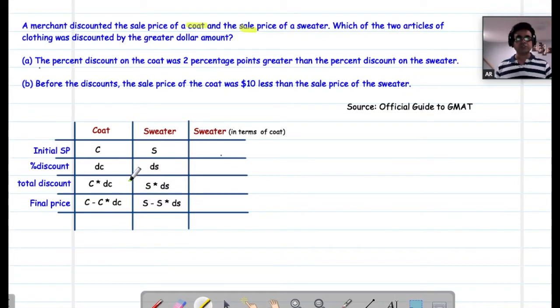And what the question is asking us is can we establish whether C multiplied by DC is greater than or less than S multiplied by DS. We have to uniquely establish. Now, as you can see, we need both C and DC and S and DS to be able to solve this question. Having just information around one of these is not going to be enough. Now, let's start looking at the answer choices.